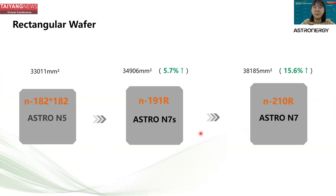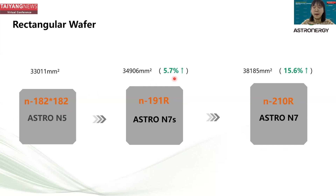The N7S adopts 191 rectangular wafer and N7 adopts 210 rectangular wafer. Comparing them with a traditional 182mm square-shaped wafer, the wafer area can be increased by 5.7% and 15.6% respectively.